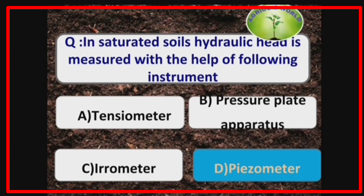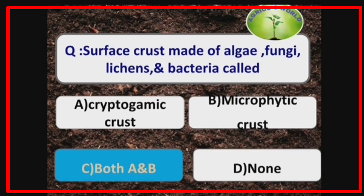A piezometer is also used to measure the depth of the water table. A surface crust made of algae, fungi, lichens, and bacteria is called a cryptogamic crust or microphytic crust.